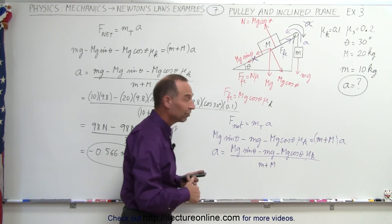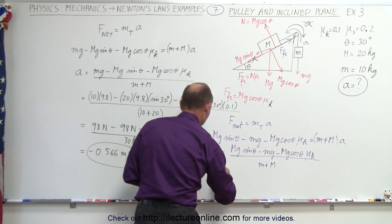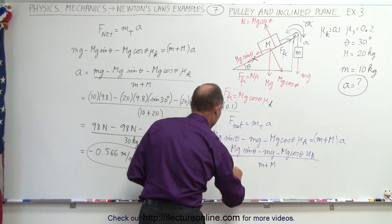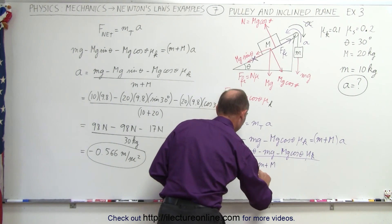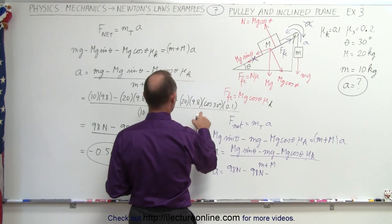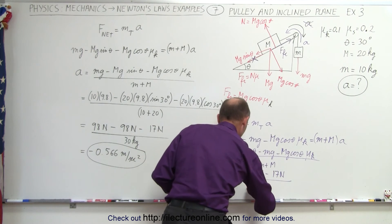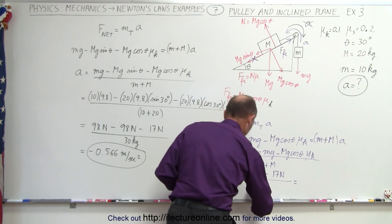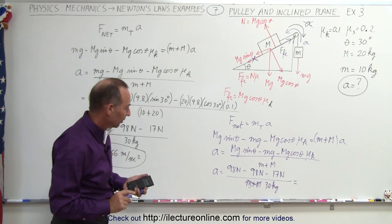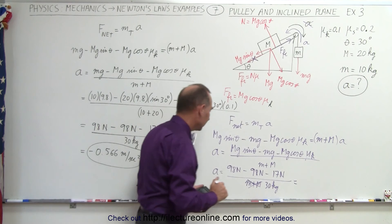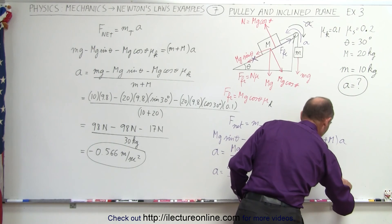Plugging in the values: A equals mg sine theta, which is 98 newtons, minus little mg, which is also 98 newtons, minus mg cosine theta times mu, which was 17 newtons, all divided by m plus M, which is 30 kilograms. When we divide 17 by 30 we again get minus 0.566 meters per second squared.